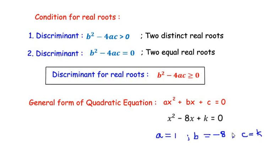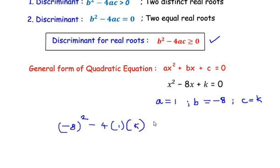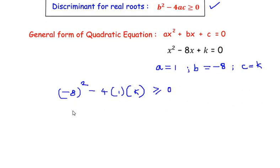We simply plug in the values of a, b, and c into the discriminant condition. So: (-8)² - 4 × 1 × k ≥ 0, which gives 64 - 4k ≥ 0.